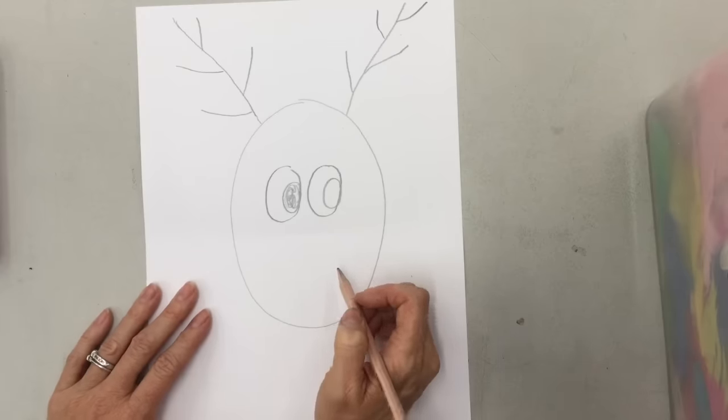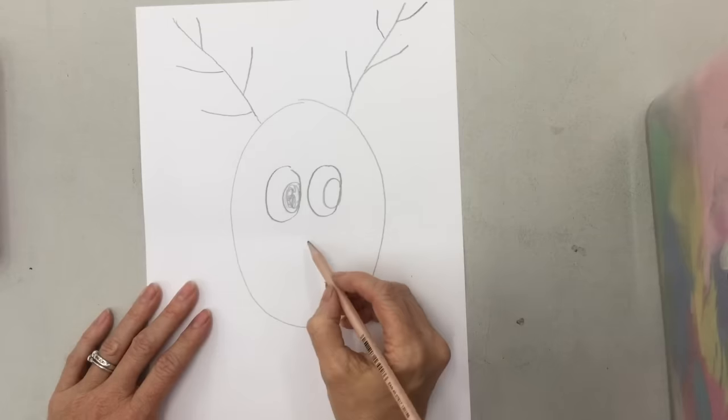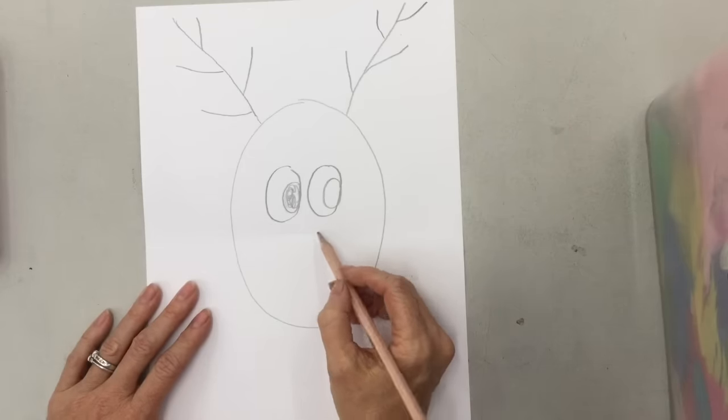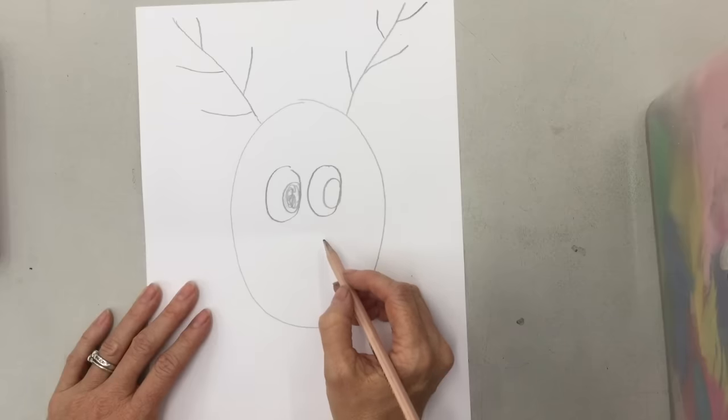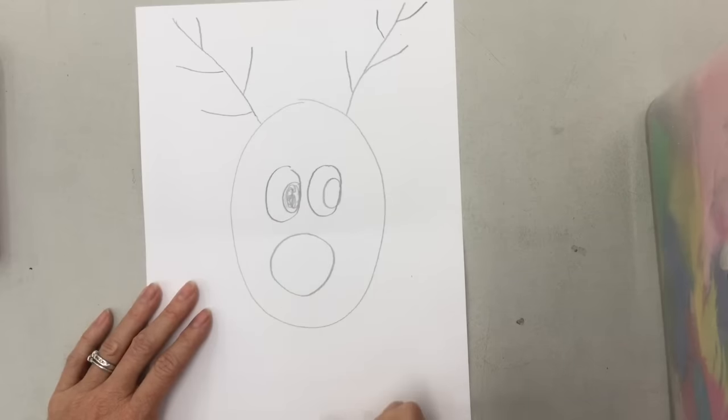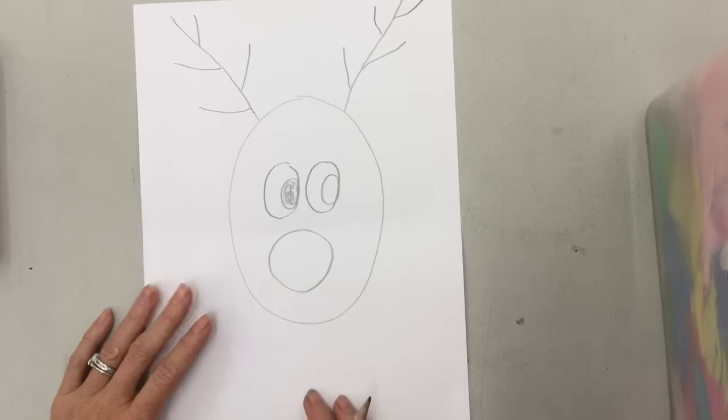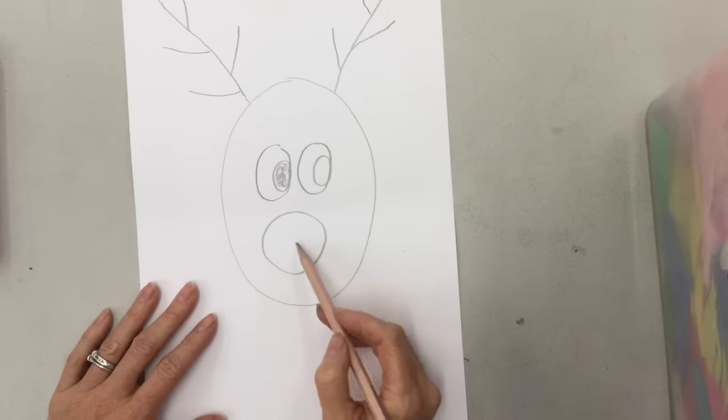The next thing we're going to make his nose. Now this is Rudolph the red-nosed reindeer, that's what I'm making. If you want to make Rudolph, that's great, you can make it red. If you don't want a red nose, you can just color it in black, it's up to you. So a nice circle in the middle, that's his nose. Now his mouth is usually under the nose, so we're not going to worry about a mouth, so we just have a reindeer with eyes and a big nose there.